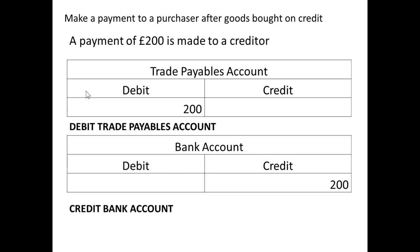Now, if we make a payment to a supplier after we've bought goods on credit, we are reducing the amount we owe. So our trade payables account will be debited — debits to a liabilities account reduce it — and we credit the bank account, as we have less money in the bank after we've paid the bill.